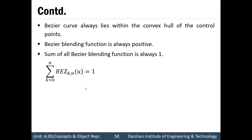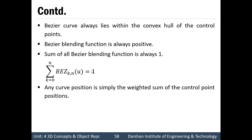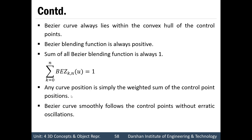The sum of all Bezier blending functions will always equal 1. If you solve all Bezier blending functions for a particular Bezier curve section and add them together, the result is always 1: the summation from k=0 to n of BEZ(k,n)(u) equals 1. Any curve position is simply a weighted sum of the control point positions. If we specify two control points at the same position, it will pull the curve towards that position because the weight there is increased. A Bezier Curve smoothly follows the control points without erratic oscillation.